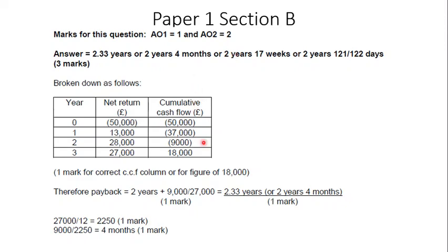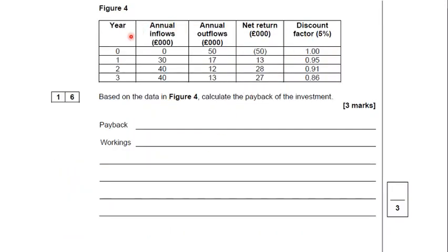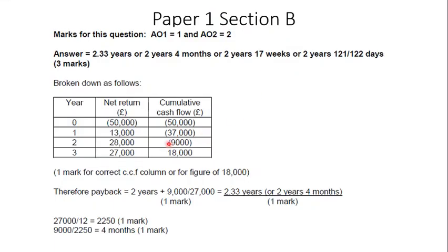Okay, so here's the mark scheme. The answer is two years four months. I've got a video for how to calculate payback, check that out, but in the video I advise you to put a cumulative cash flow column on to the table. You can see that there's no cumulative cash flow column here, but you get one mark for the correct cumulative cash flow problem or for a figure of 18,000 which you'd have got at the end. There are the workings that you've got. It says you can give four marks, sorry, three marks for the correct answer. And then if you haven't quite got that, as I said, show your workings and you should pick up some marks.